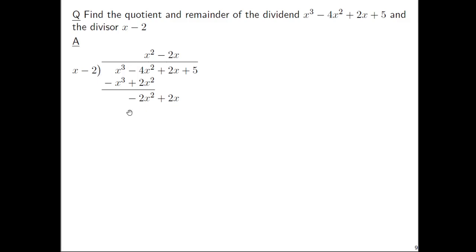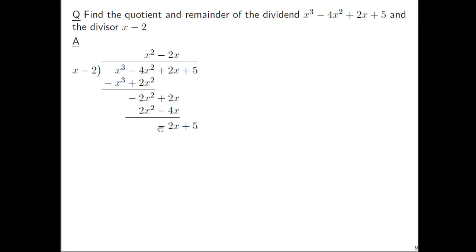But since we're going to have to subtract that, let's distribute a minus sign and have 2x squared minus 4x. Now we can add in each column. So negative 2x squared plus 2x squared is 0, and then 2x plus negative 4x is negative 2x. Bring down the 5. Then again, ask the same style question: something times x is negative 2x, so that should be a negative 2 here.